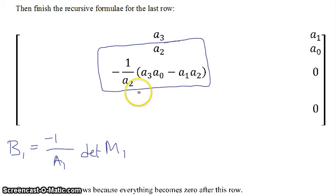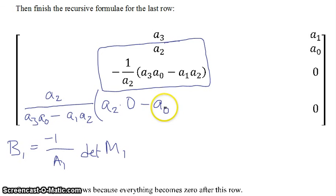So to do that, let's go ahead and write that down. So minus 1 over A1 is A2 over A3 A0 minus A1 A2. Then you have your determinant term, and your determinant term will be A2 times 0, right? That's this guy times this guy, minus A0 times this one here. A0 times negative 1 over A2, times A3 A0 minus A1 A2.